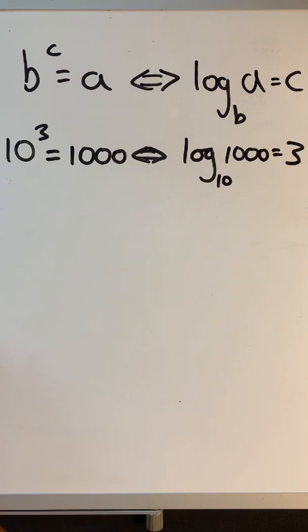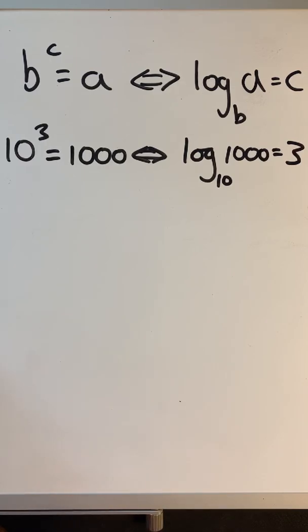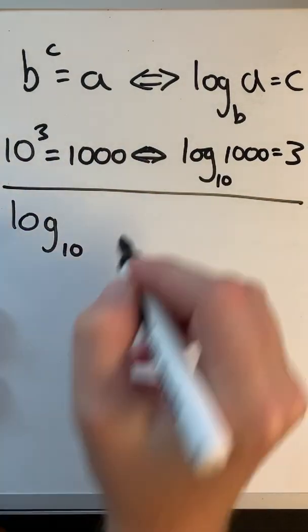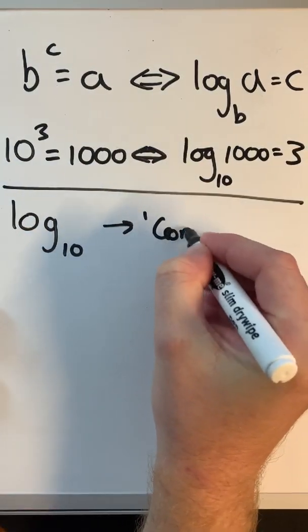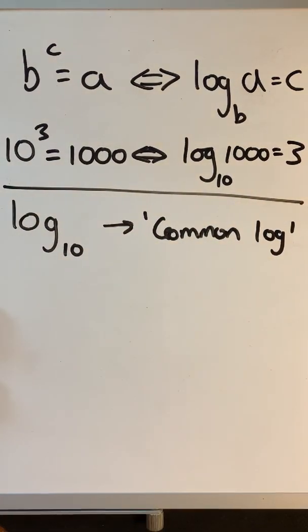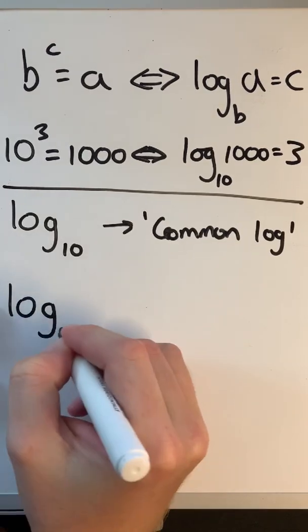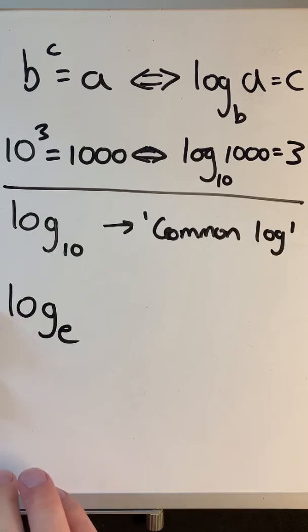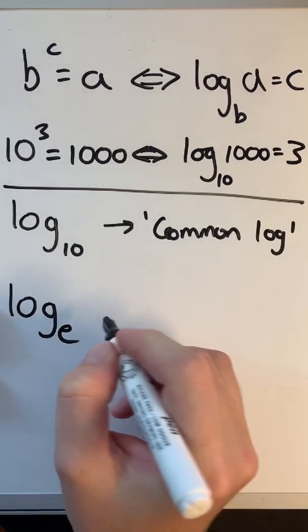We can use any base. The most popular ones in engineering are log to the base 10 and log to the base e. We also see log to the base 2 sometimes, mostly in computing when dealing with binary operations. Log to the base 10 is called the common log. Log to the base e — where e is Euler's number, approximately 2.71828 — is another key base.